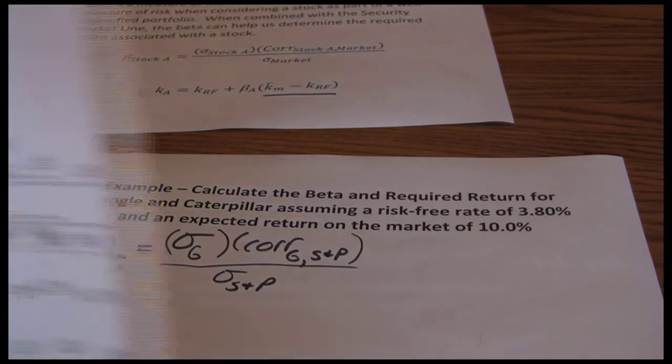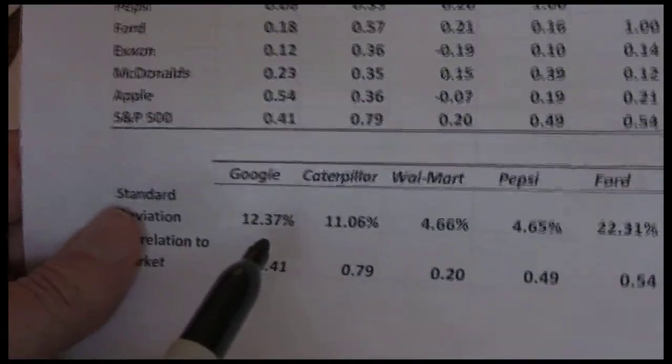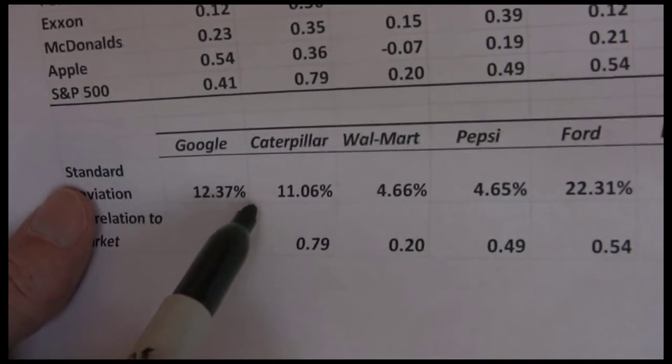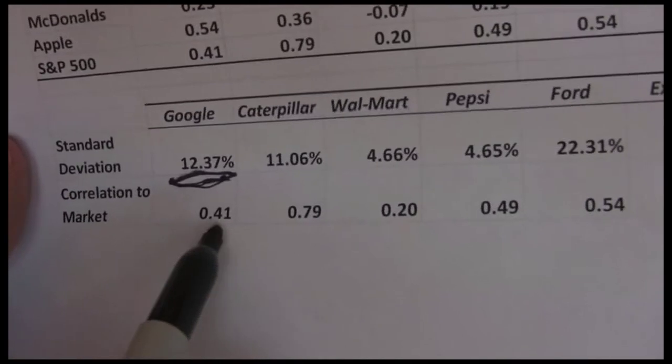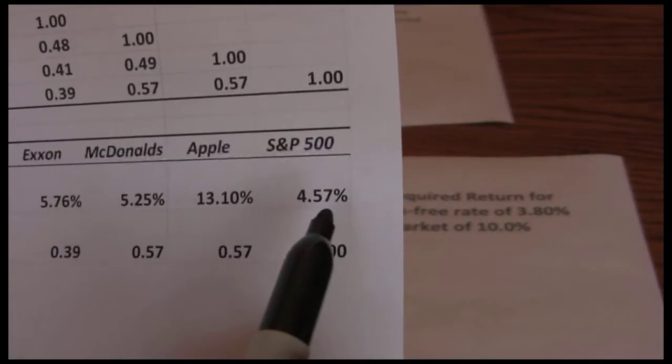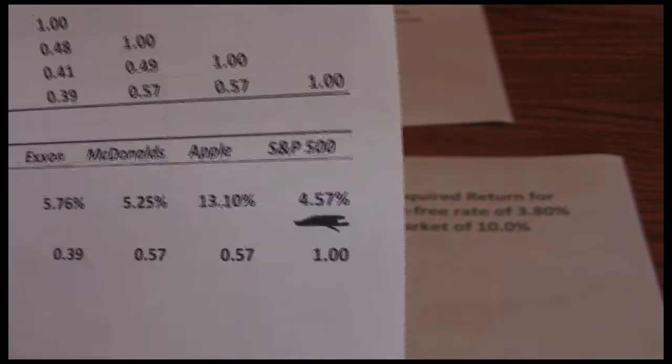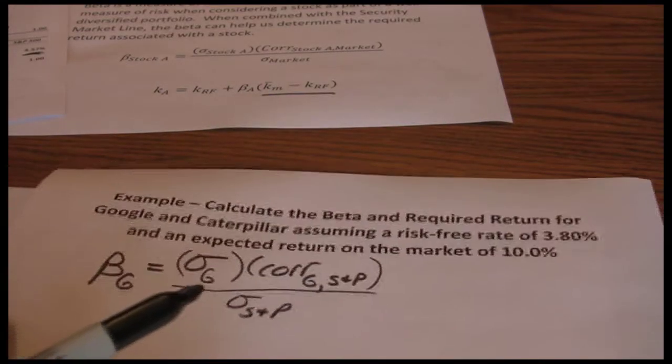So now as we look here, we can see that the standard deviation for Google is 12.37%. The correlation between Google and the market is 0.41 and the standard deviation for the market, that S&P 500 is 4.57. So when we go in and do these calculations here.